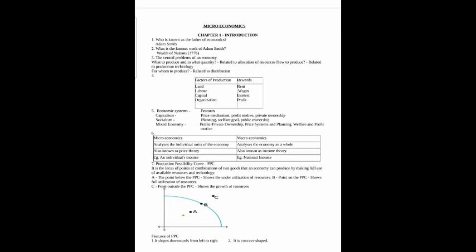The main part of this chapter is the Production Possibility Curve. PPC is the Production Possibility Curve. It is the locus of points of combination of two goods that an economy can produce by making full use of available resources and technology.